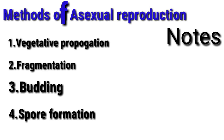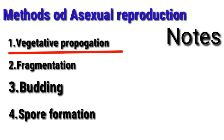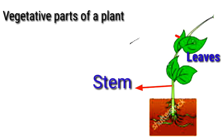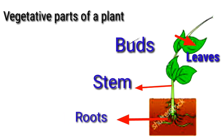Let's explain the methods of asexual reproduction. In vegetative propagation, the vegetative parts of a plant are used. These vegetative parts include stem, leaves, buds, and roots. For example, we have a stem — the stem is a vegetative part.